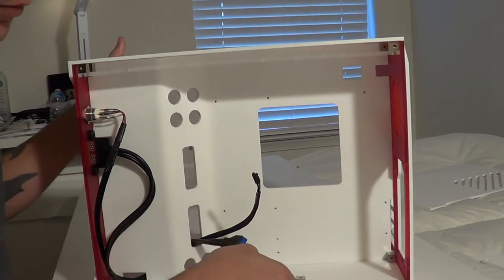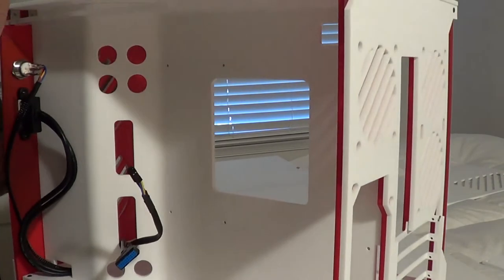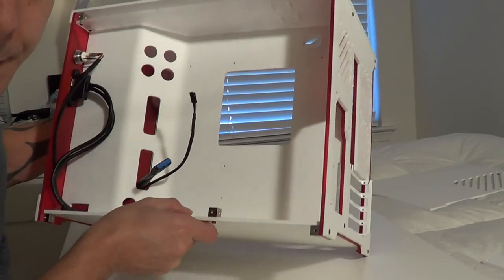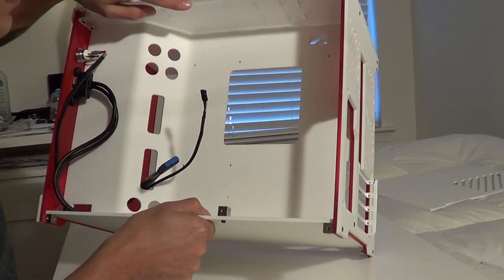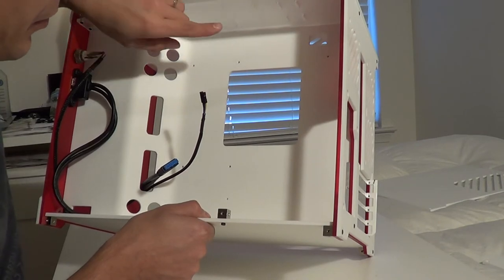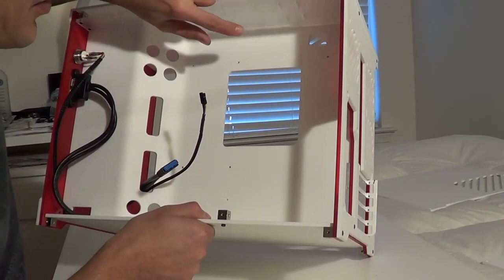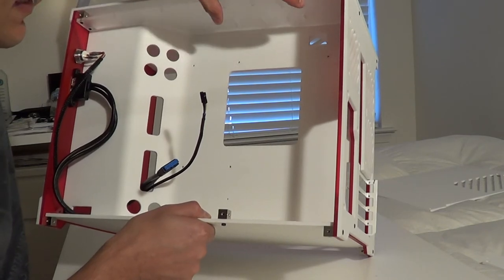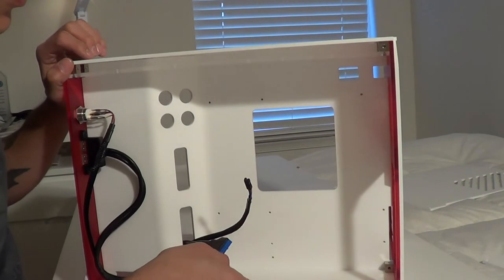Right here, we've got our standoff for our power supply. Also something to note is right here, I'm going to try to turn it and get you a good angle. Up here in the top is a piece of clear plexi that is actually your hard drive mount. You can fit 3.5 and 2.5 inch hard drives or SSD up here, and they actually hang down and they'll be vertical with the ground.